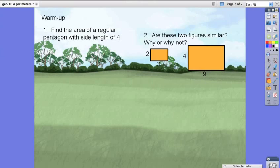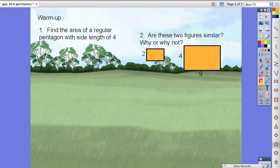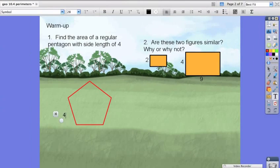Hopefully you've paused your screen and you're coming back to check the answers. For number one, it says find the area of a regular pentagon. So in order for us to do that, let's sketch out a quick pentagon with lengths of side four.